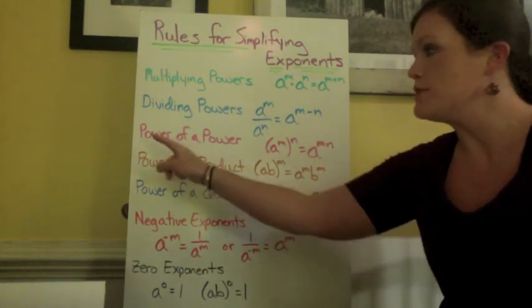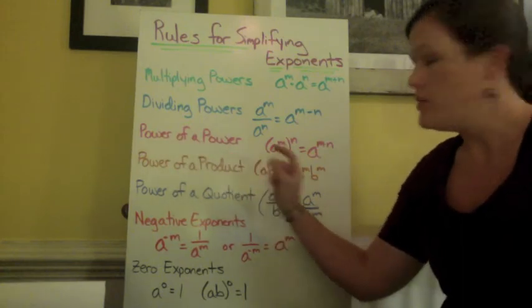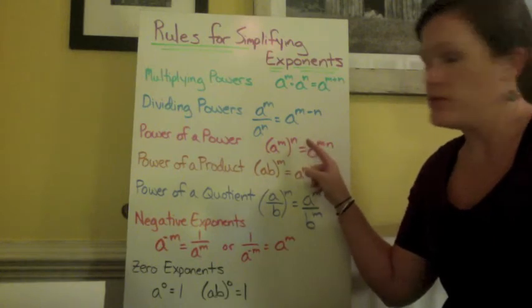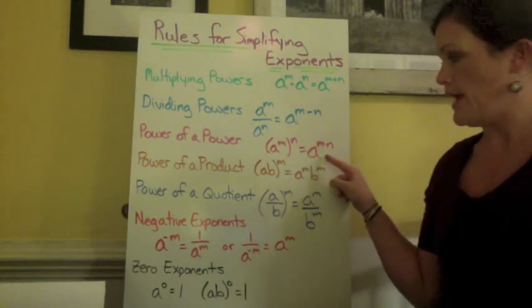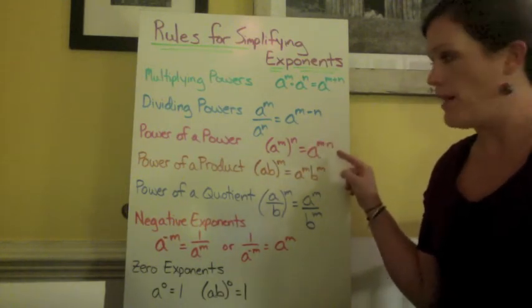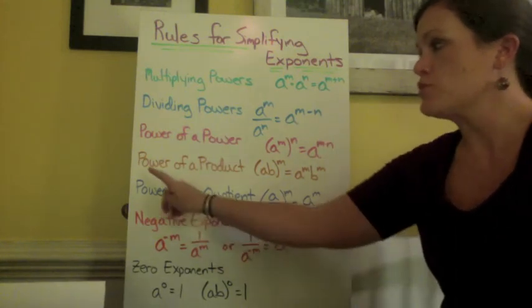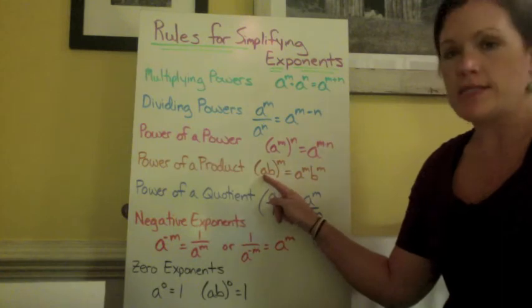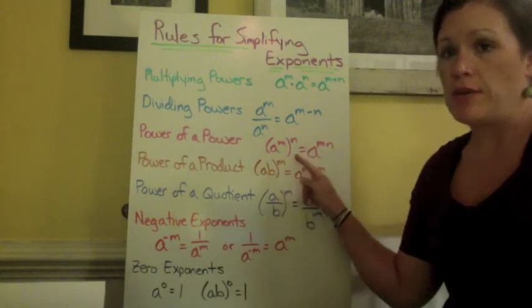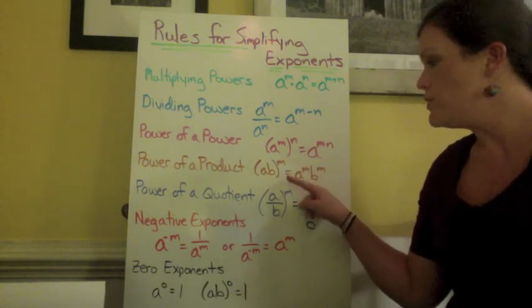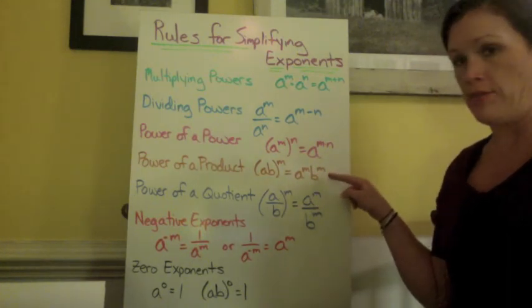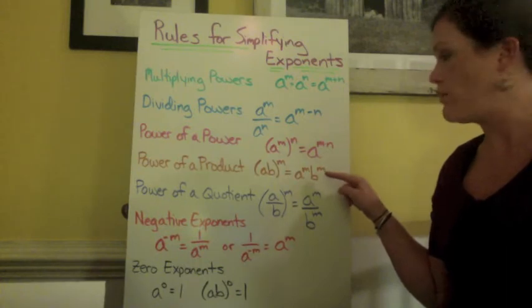The next rule states power of a power. So when we have a to the m power to the n power, we need to multiply and we get a to the m times n power. The next rule is power of a product. When we have a times b to the m power, we can distribute and we get a to the m power times b to the m power.